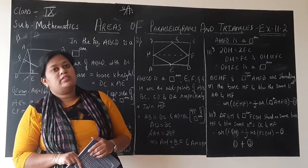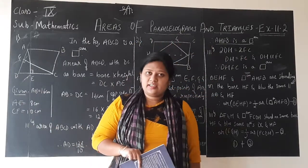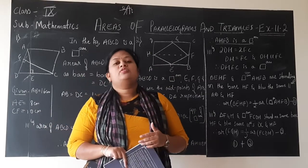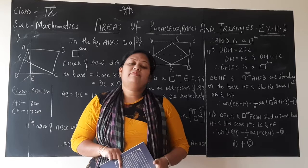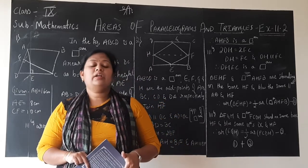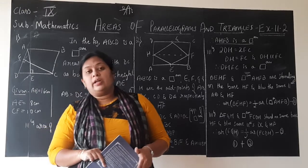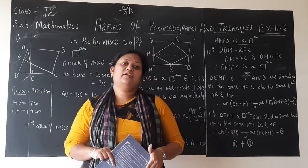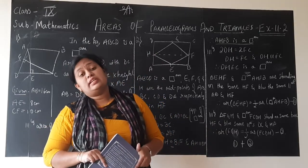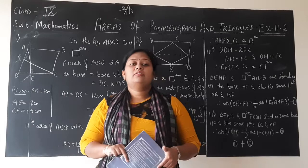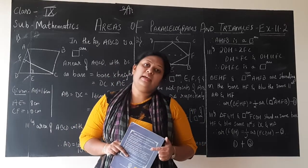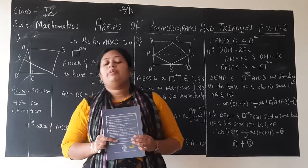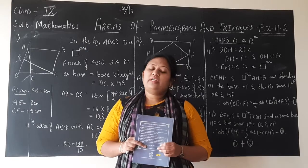We are mainly studying about the areas of parallelograms and triangles which are standing on the same base and between the same parallels. We also covered the first exercise of this lesson, Exercise 11.1, and learned Theorem 11.1, which states that if two parallelograms are standing on the same base and between the same parallels, then their areas are equal. We proved that theorem as well.